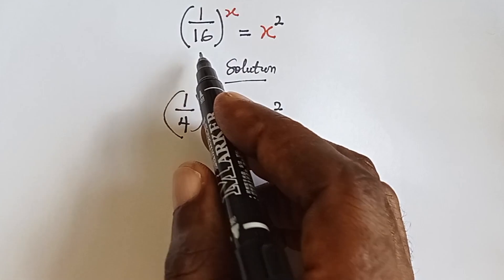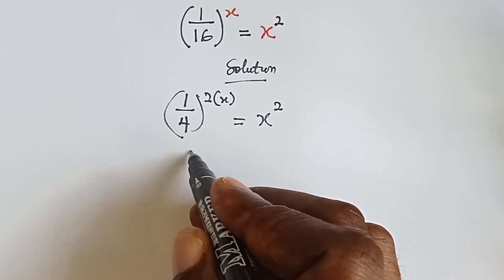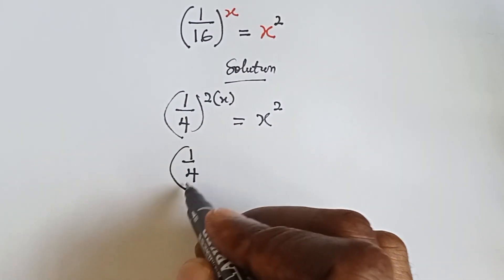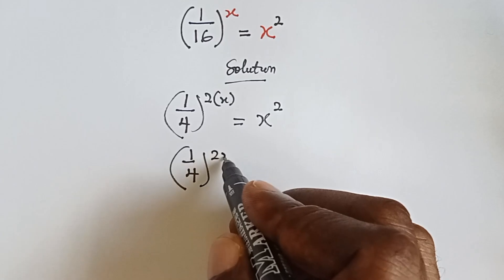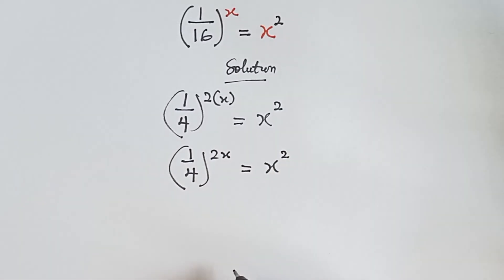Alright, so you know this will give us 1 over 16, and then when you open that bracket we have 2 times x gives us 2x equals to x raised to power 2.